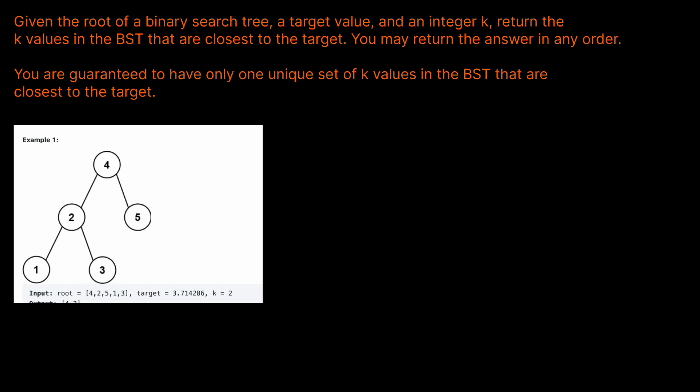Given the root of a binary search tree, a target value, and an integer k, return the k values in the binary search tree that are closest to the target. You may return the answer in any order. You are guaranteed to have only one unique set of k values closest to the target.